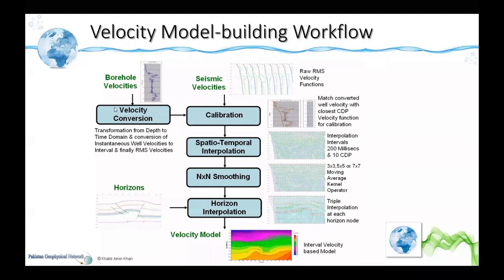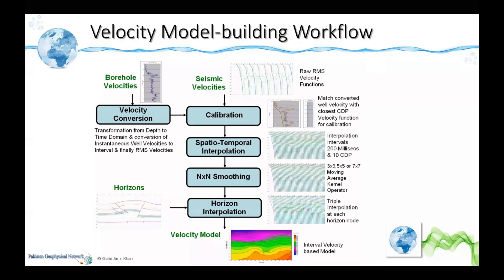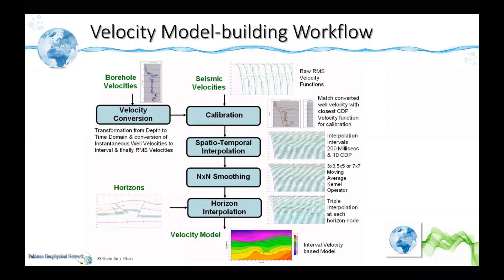We first convert the well velocities into the same domain to match apples with apples. Seismic velocities are RMS velocities, whereas sonic velocity is technically instantaneous velocity; when we block-average it for a unit interval it becomes an interval velocity. After averaging, we get an interval velocity function and then convert it to average velocity. Similarly, the picked RMS velocities are also converted to average velocity. Then we calculate the calibration curve — the ratio of well velocity to sonic velocity — and multiply all velocity functions by that curve.